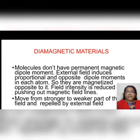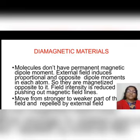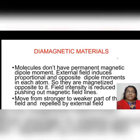Now we will move on to the types of magnetic materials. Some materials are attracted towards an external field, some are repelling, some are feebly attracting, and some are strongly attracting. Depending upon their behavior in an external magnetic field, they are classified as diamagnetic, paramagnetic, and ferromagnetic materials.